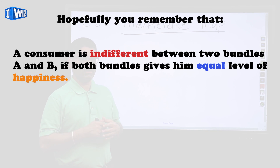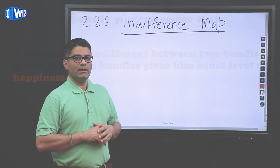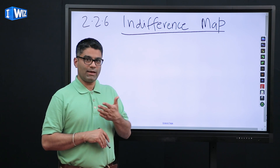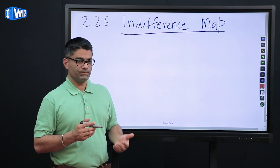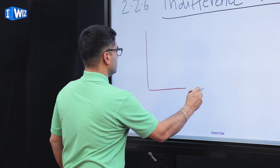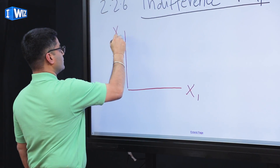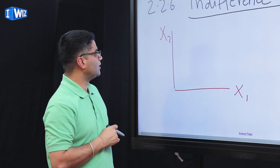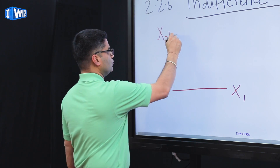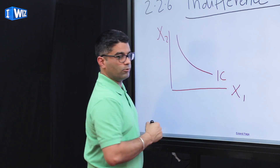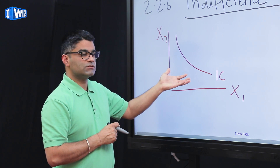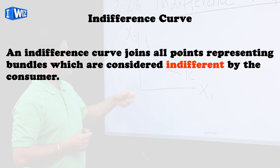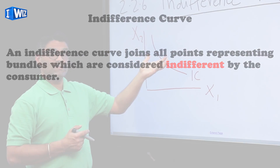Today we're going to bring it all together. An indifference map is a graphical representation across all bundles between which you are indifferent and also across all indifference curves. Hopefully you're very comfortable with drawing a graph like this — one indifference curve we've already talked about, where every point on this indifference curve leaves you equally happy. But an indifference map is all the bundles across all the indifference curves.